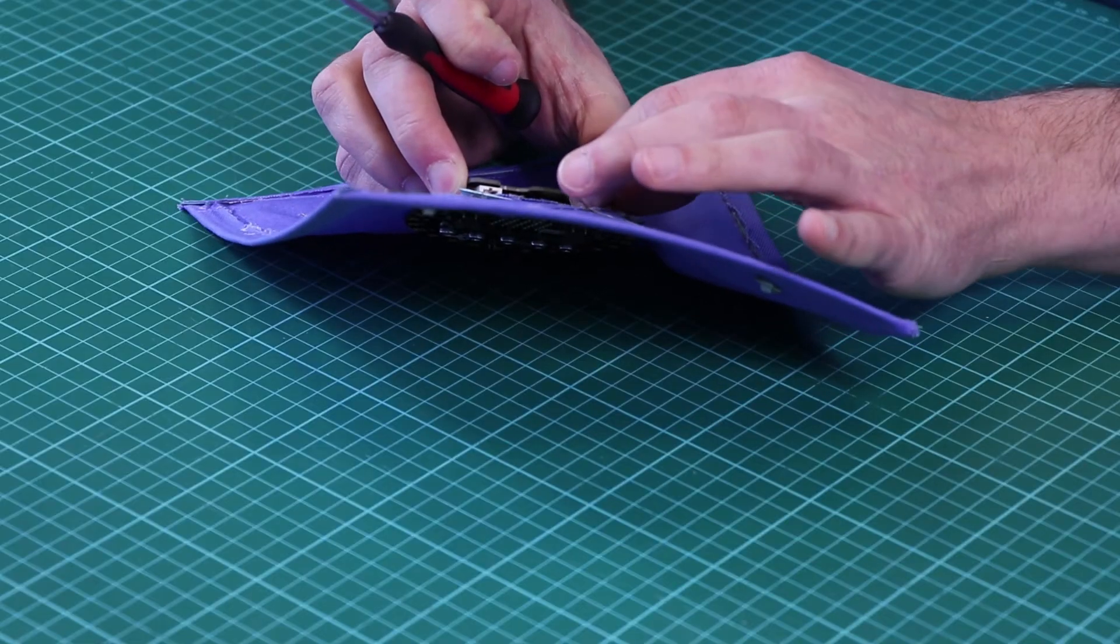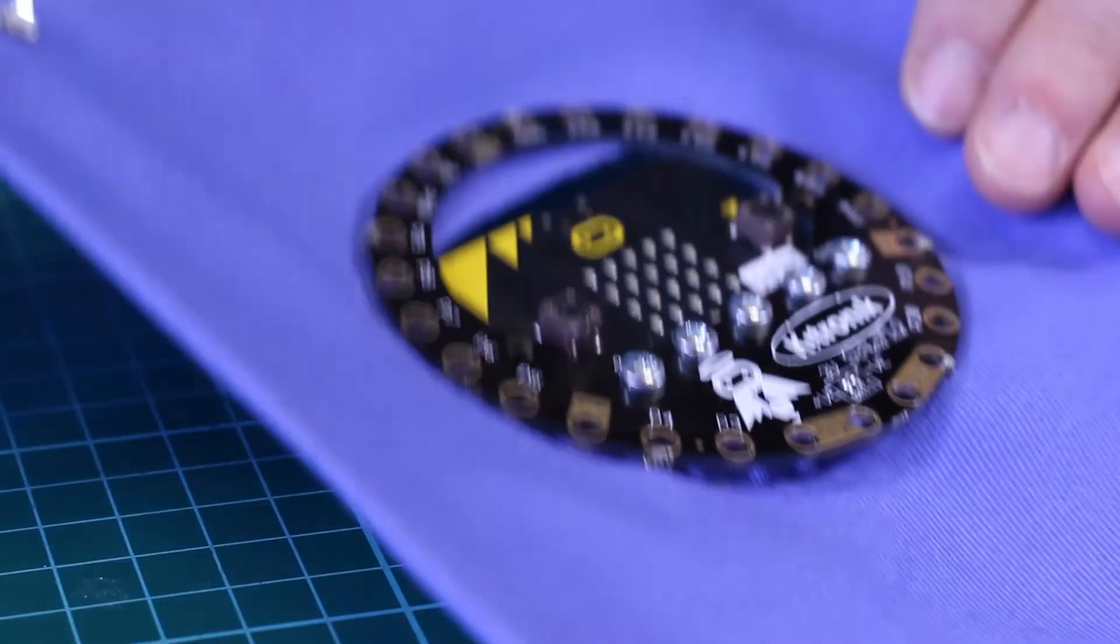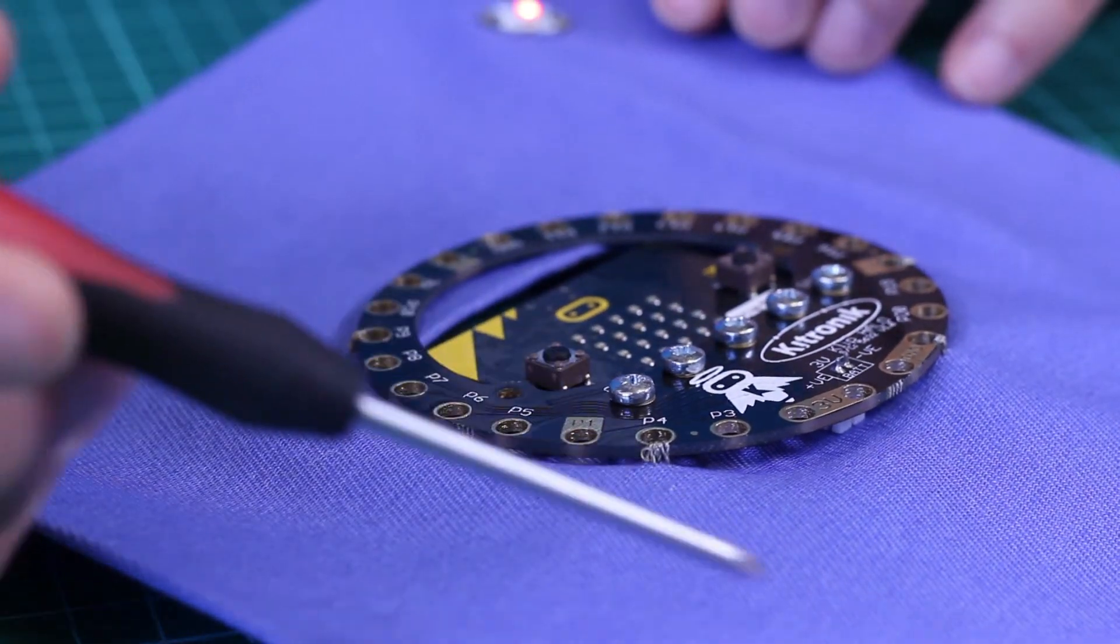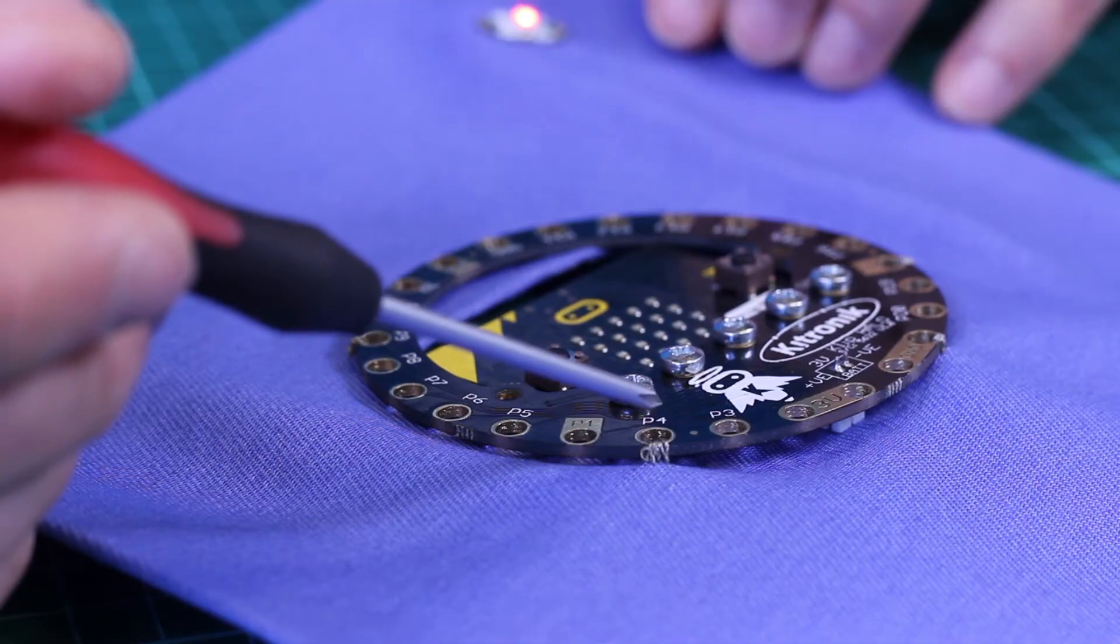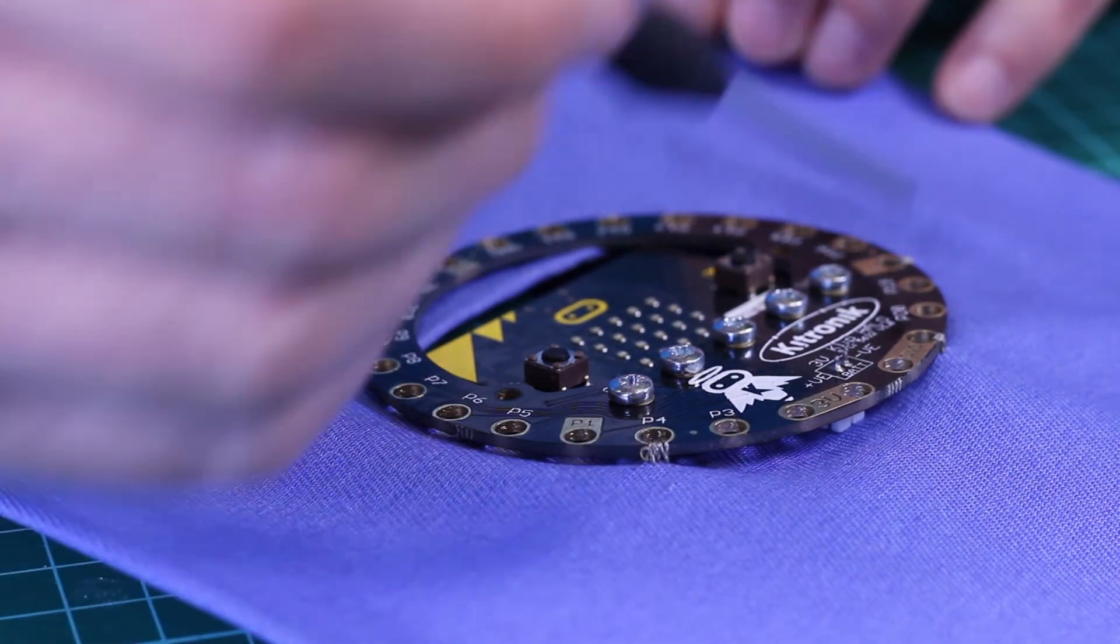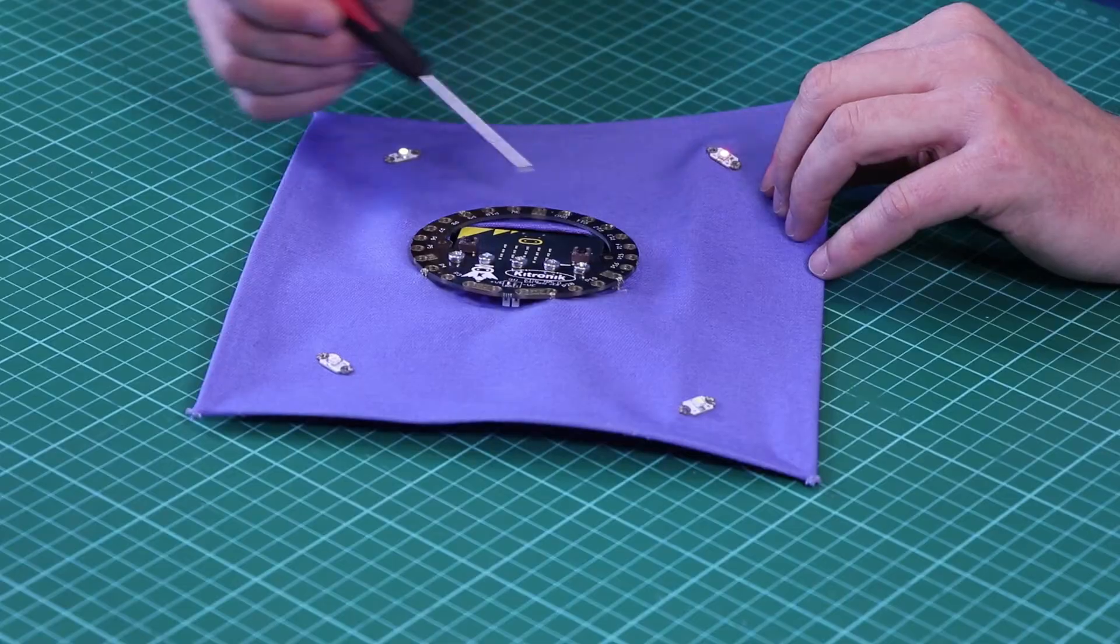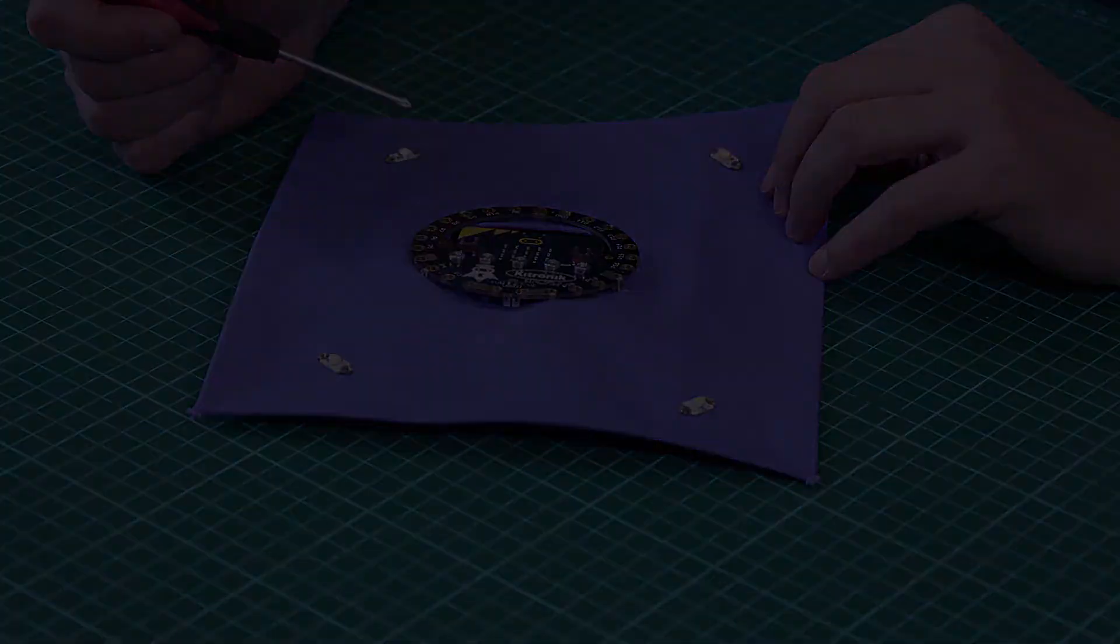If I turn this on, we'll get a little tune because of the onboard buzzer on the mi:power board. You can see now the LEDs are flashing. The connections and control are made using this conductive thread - each one is sewn to a different pin on the outside of the Clip Halo.